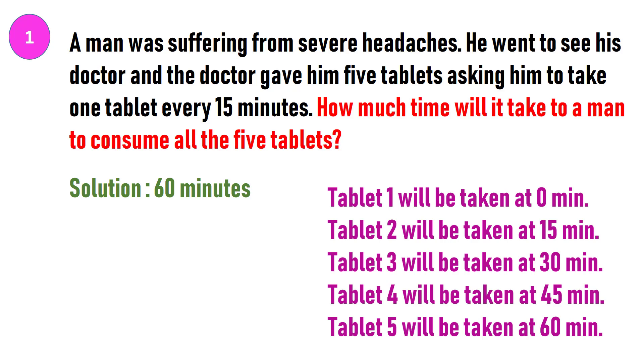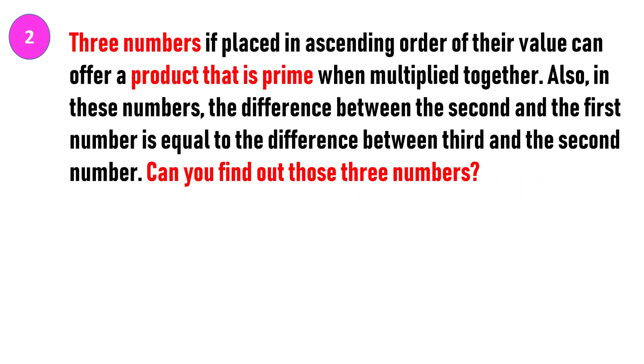Three numbers if placed in ascending order of their value can offer a product that is prime when multiplied together. Also in these numbers, the difference between the second and the first number is equal to the difference between third and second number. Can you find out those three numbers?